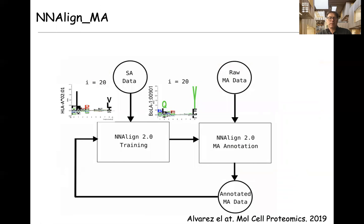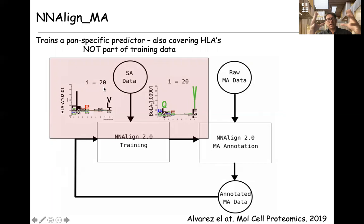So we have to find a way to deconvolute and cluster these peptides into sub-motifs where each sub-motif will correspond to one MHC specificity. This is a far from trivial task. We designed an algorithm called NNAlign MA — MA for multi-allele — and it's very simple in concept but really powerful. It builds on the idea that you can train a pan-specific method on single allele data, meaning data either from binding affinity or mass spec from cell lines expressing only one single MHC molecule. We can then use that model to annotate the multi-allele data so that each peptide gets assigned to one single allele, and then feed them back into the training data and train again.